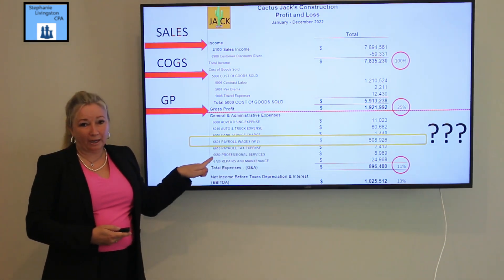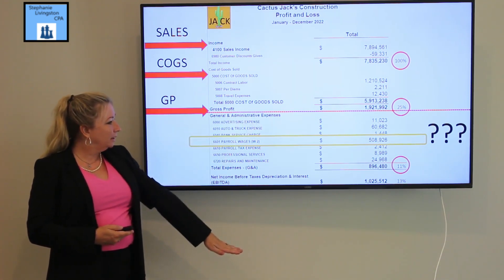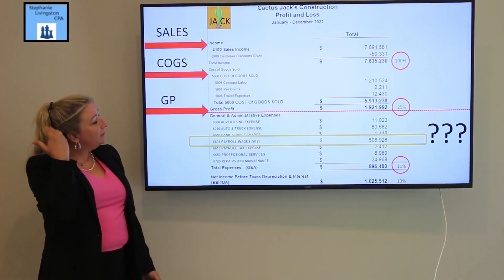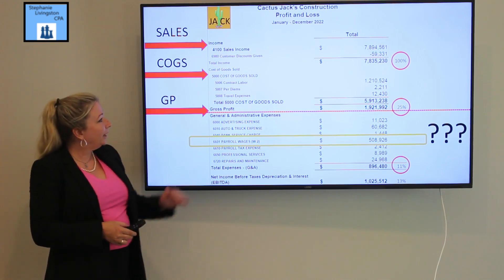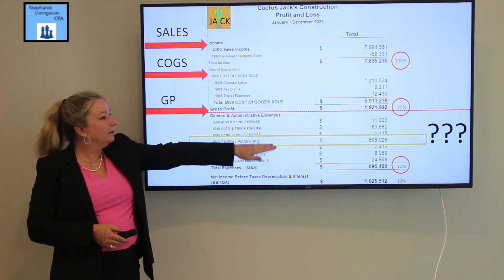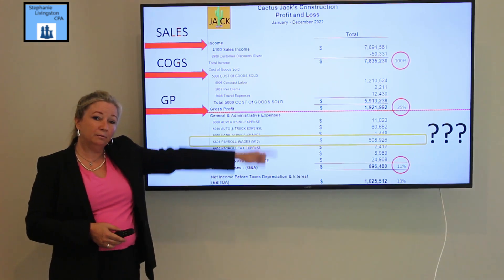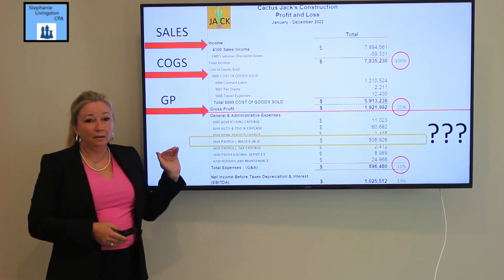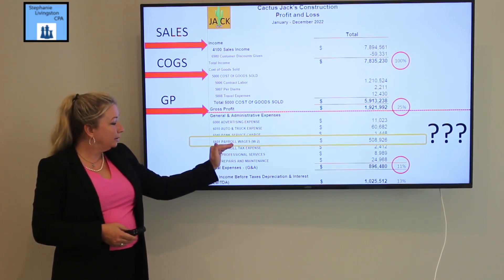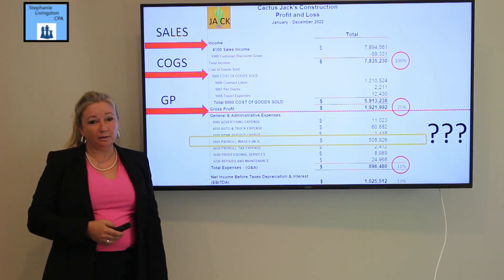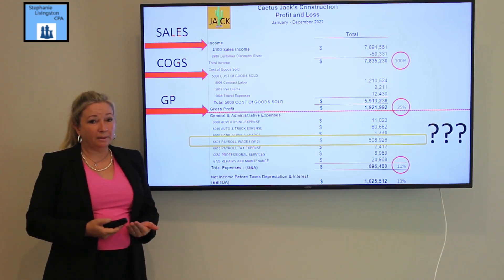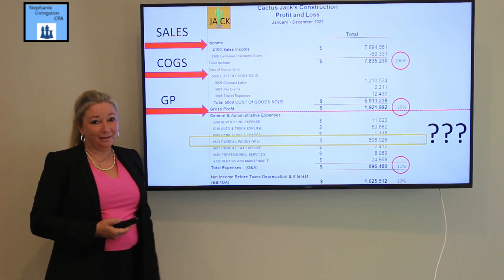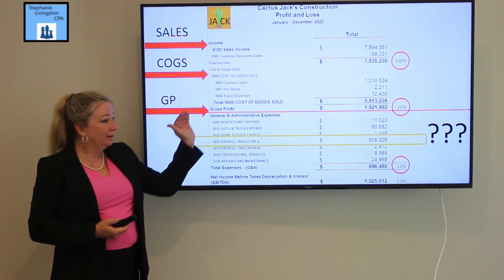This is a common mistake. If part of your W-2 wages are used to sell or perform a job, those wages actually belong above the line. If you have job costs buried inside your overhead — which is general and administrative costs — and part of your cost of goods sold is down there, are you really making a 25% gross margin? No, you're making less. You missed an opportunity to learn because wages for people who perform services resulting in a sale belong above the line.